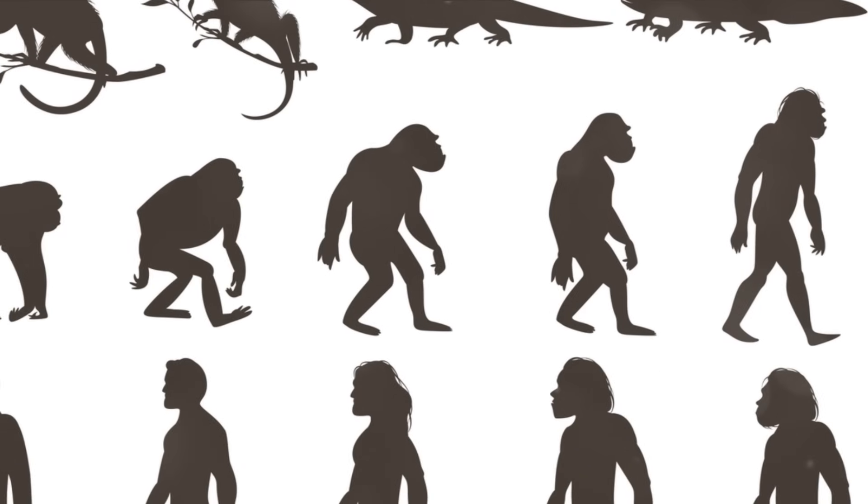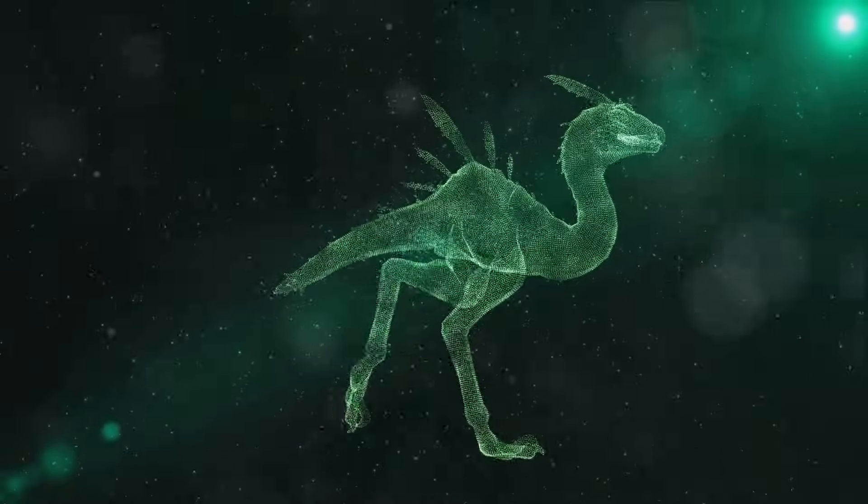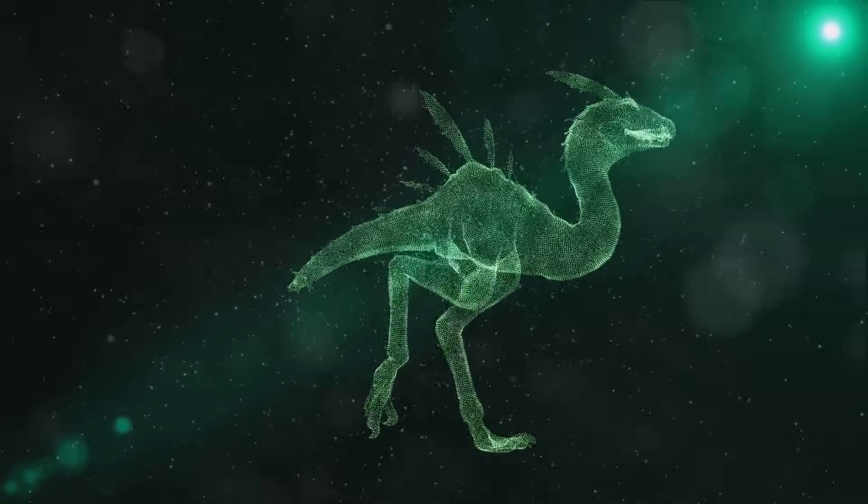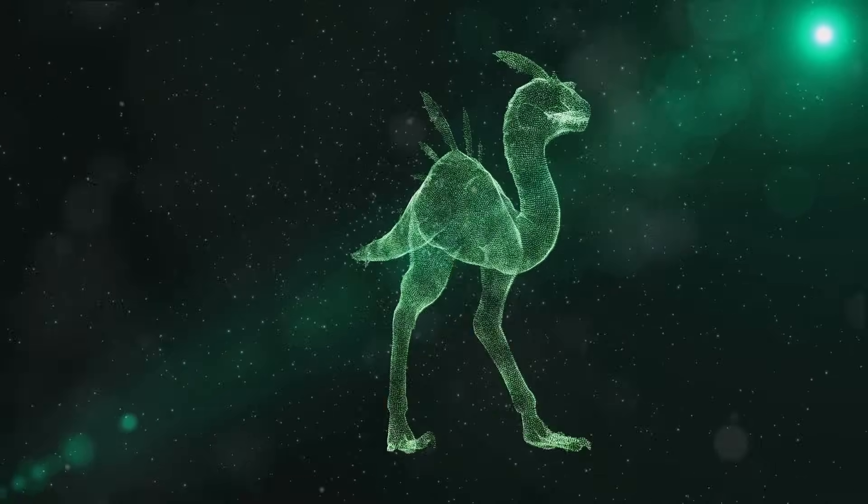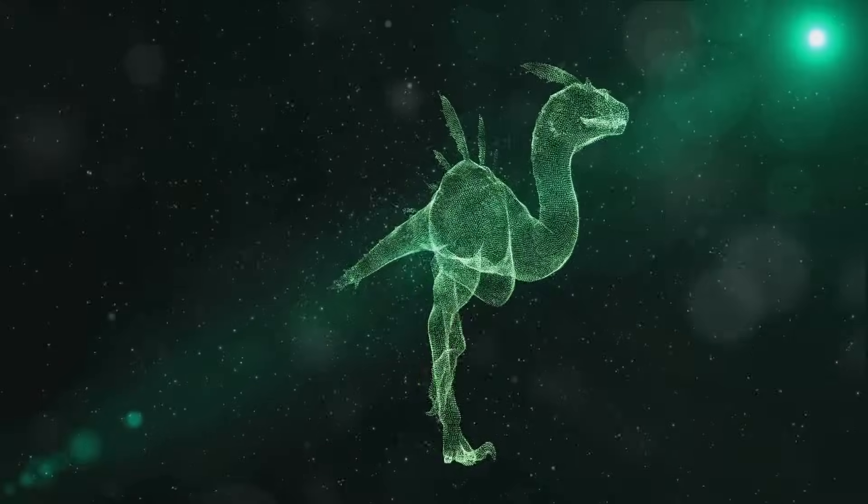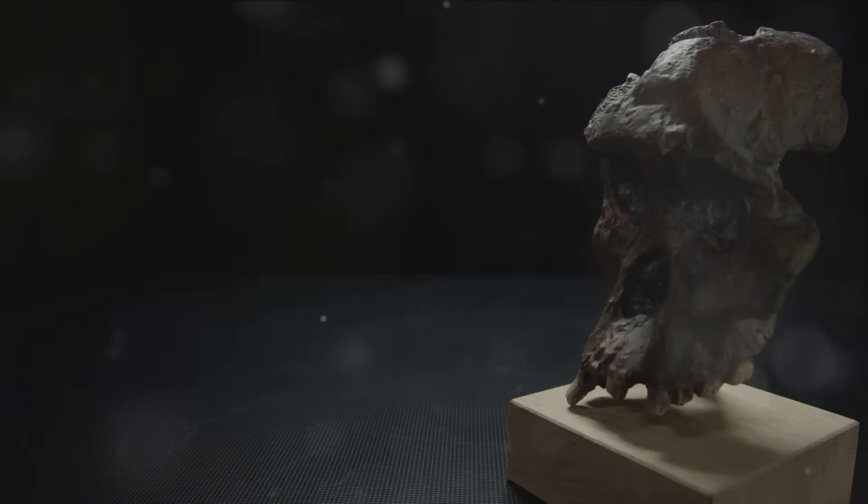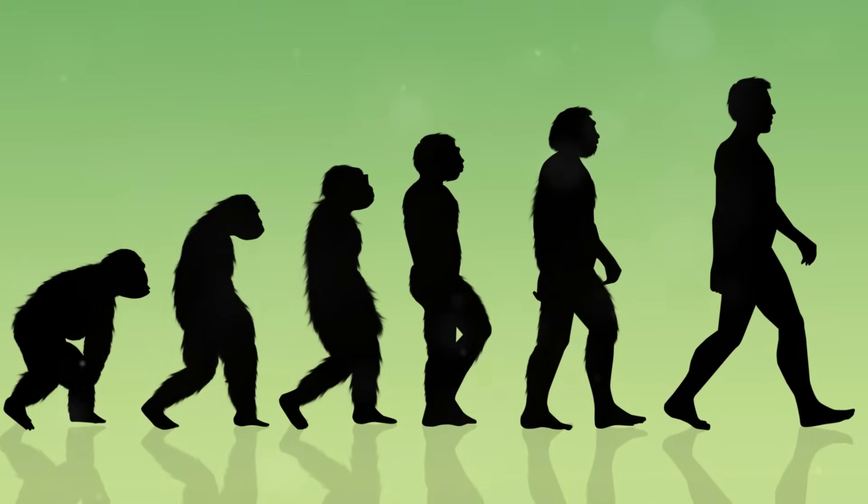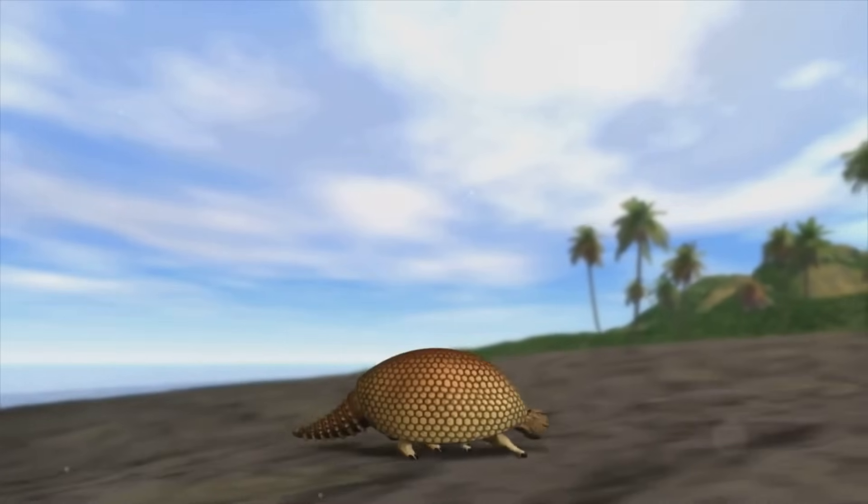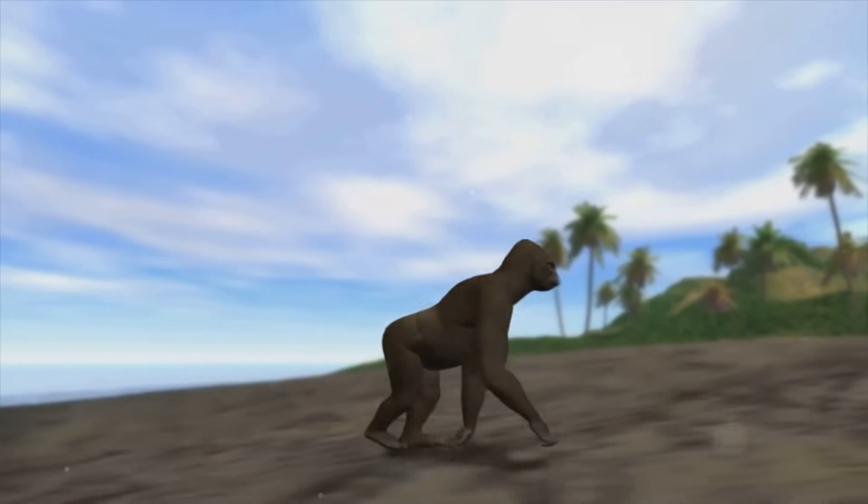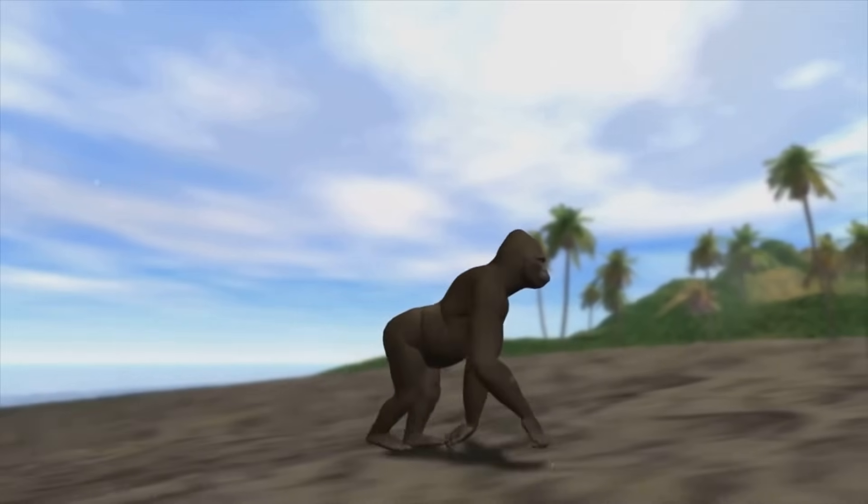Our ancestors started off as small, furry creatures scurrying around in the shadows of the dinosaurs. Over time, they transformed into upright walking beings, with brains capable of complex thought and creativity. This transformation didn't happen overnight. It was the result of countless tiny changes, each one providing a slight advantage in the game of survival. The forces driving these changes were numerous. The shifting of continents, the changing climate, the emergence of new diseases and the competition with other species all played a role in shaping us.